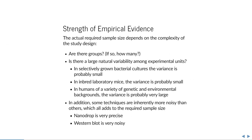The required sample size depends on study design complexity. For instance, bacterial cultures from the same strain raised under the same conditions would show small variance, as would inbred laboratory mice raised in nearly identical environments. But in a clinical trial including humans of varied genetic and environmental backgrounds, variance between individuals will be very large, which increases the required sample size. Additionally, some measurement techniques like nanodrop are very precise, while others like western blots introduce substantial error, also increasing required sample size.